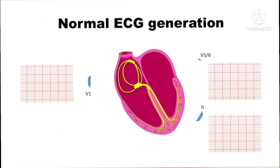How does normal ECG generation happen? After the formation of the P wave, since the first deflection is towards the lead, we have a small positive deflection, then a net deflection away from the lead, giving a negative deflection followed by repolarization. This is a normal QRS complex in V1, a right-sided lead — it could be V1 or V2.